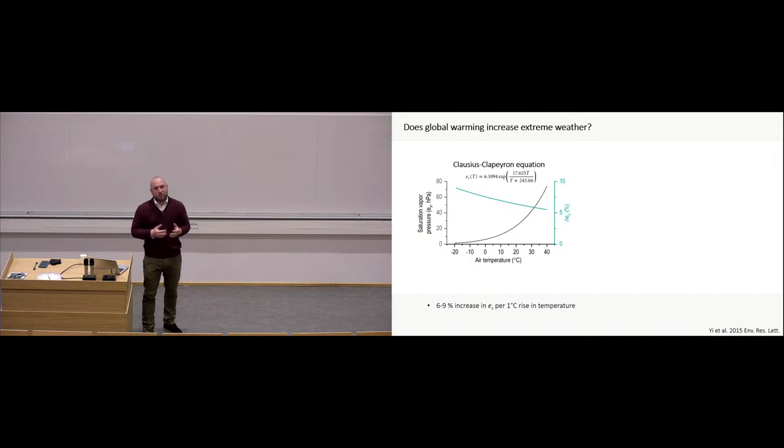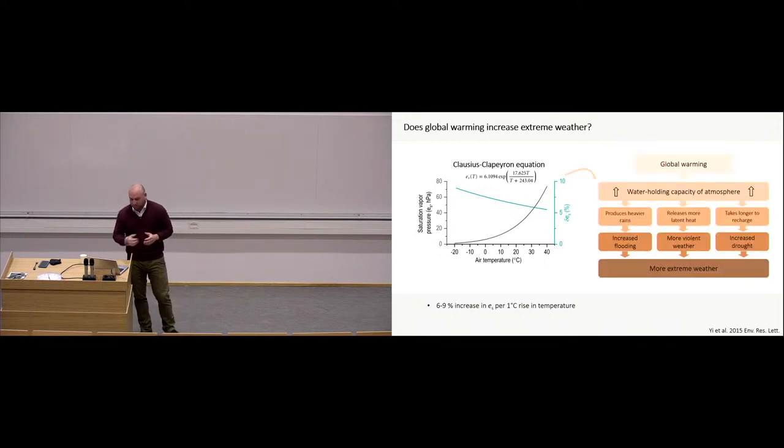So one of the questions I had was whether does global warming increase extreme weather? And I think one of the more compelling explanations I found was this, the relation, the Clausius-Clapeyron equation, which is based on the laws of thermodynamics. And it explains the saturation vapor pressure, so the moisture content of the atmosphere, and how that changes with an increase in temperature. And what we can see is that there's, on average, a seven to eight percent increase in saturation vapor pressure for every degree rise in temperature. The links to extreme weather could be quite clear. So as the water holding capacity of the atmosphere increases, this produces heavier rains, releases more latent heat, which causes more violent weather. And the atmosphere takes longer to recharge, which creates increased droughts.